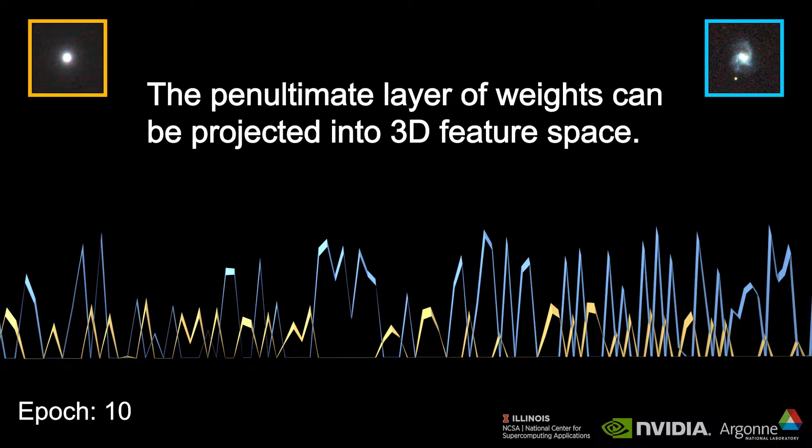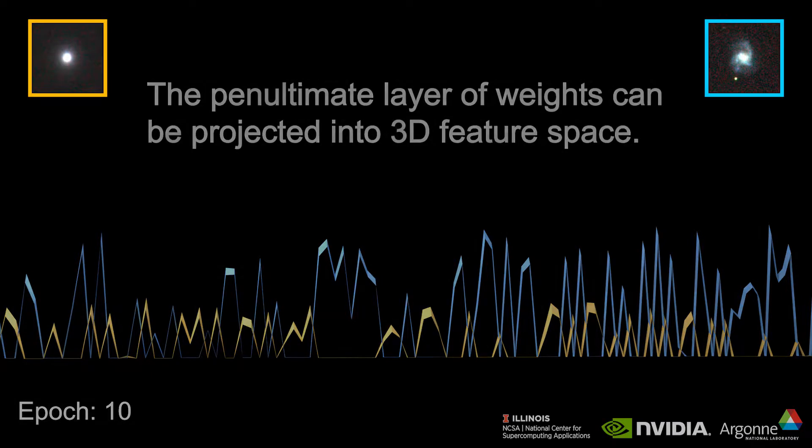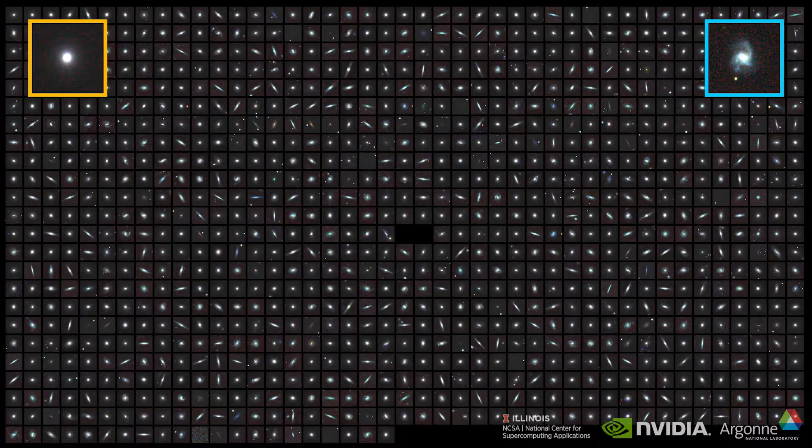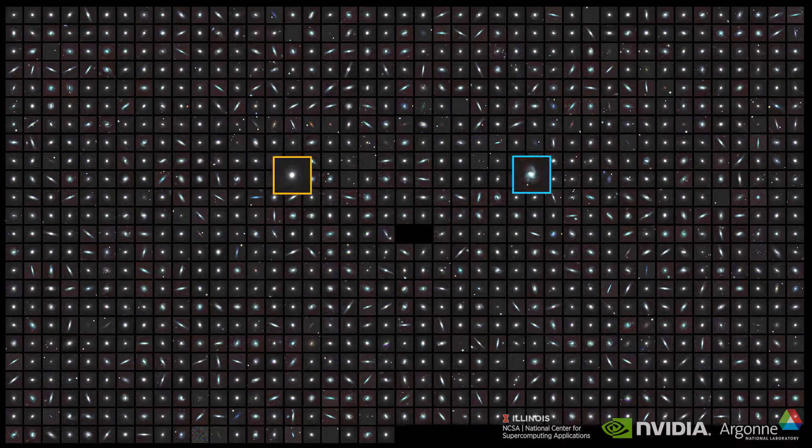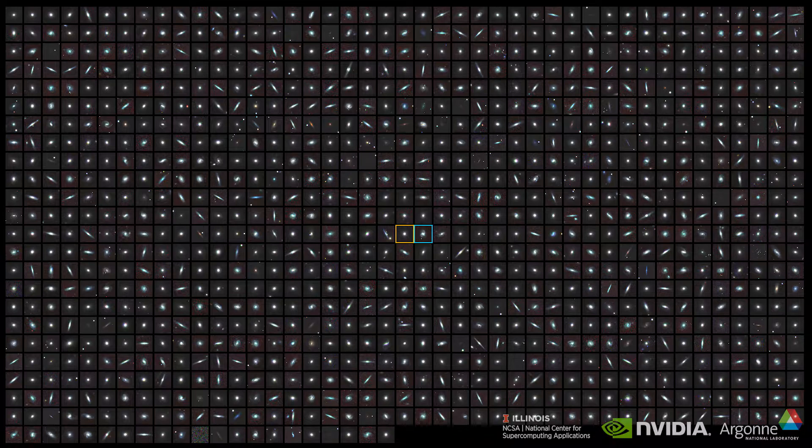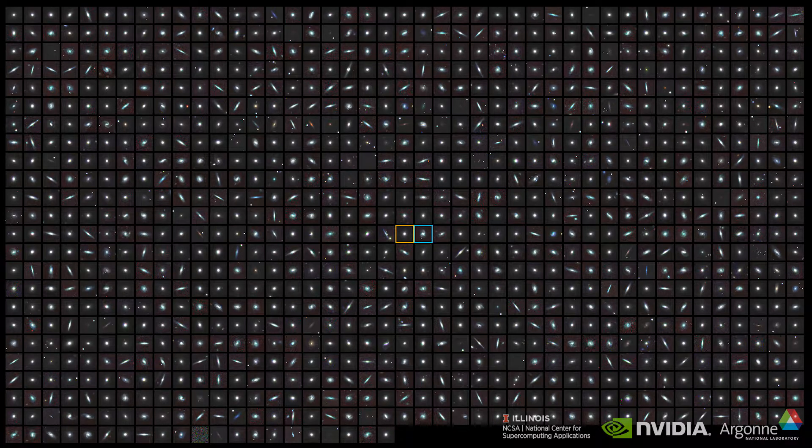The penultimate layer of weights after training are a little over 1000 parameters, which we can represent in three-dimensional space using a projection algorithm. The projection algorithm essentially condenses the relevant information which the network has learned and allows us to visualize its representation of the spiral and elliptical galaxies.